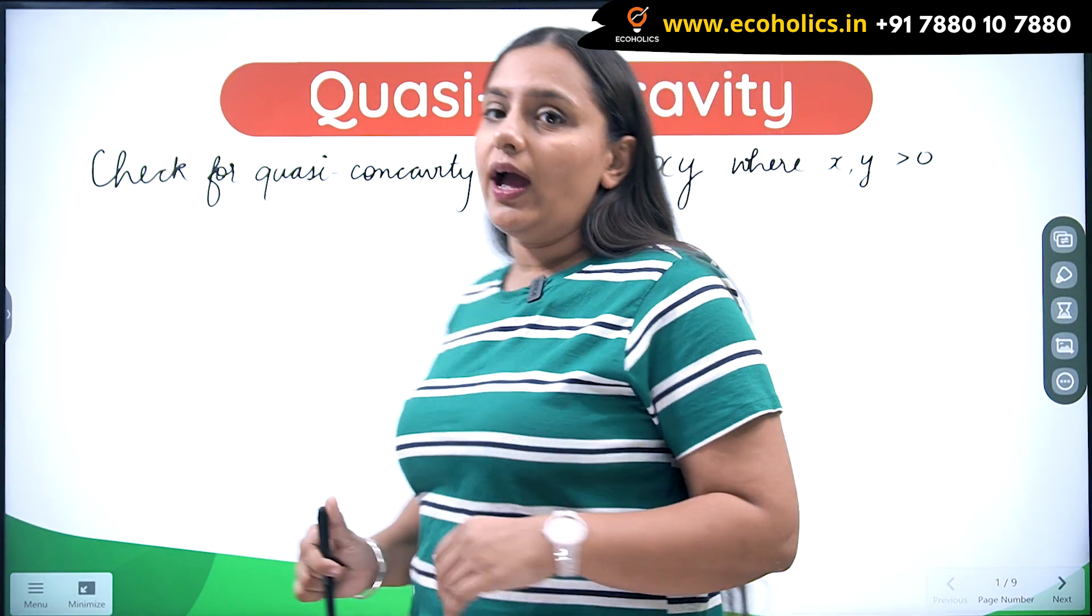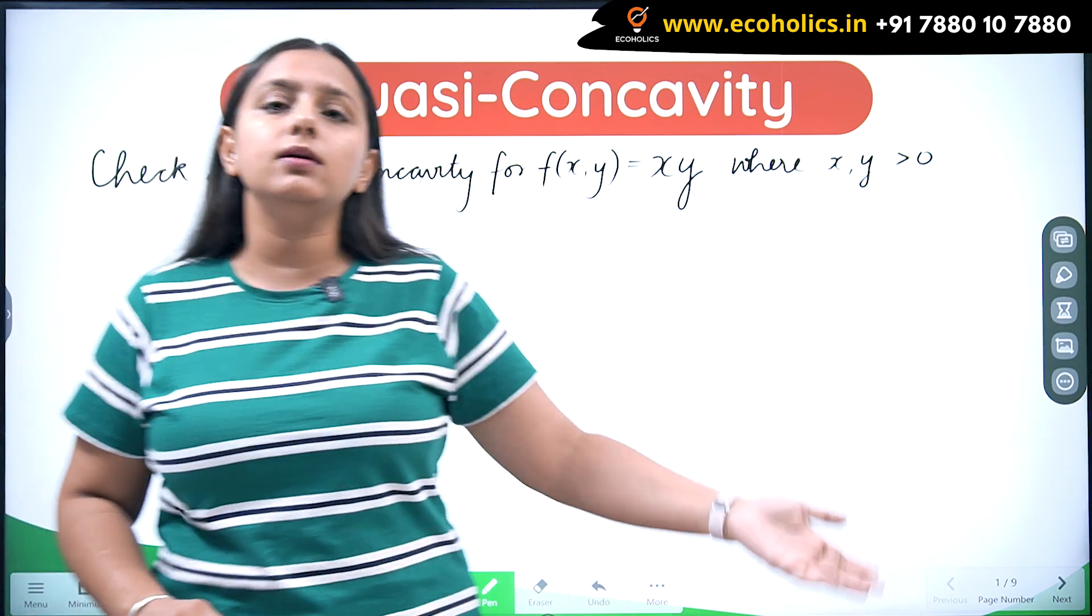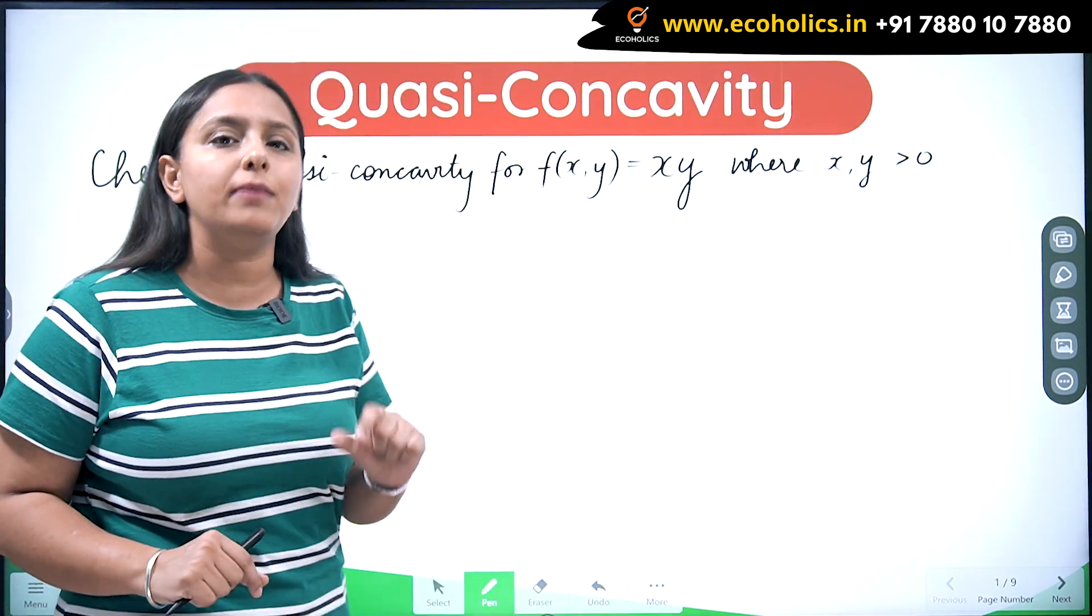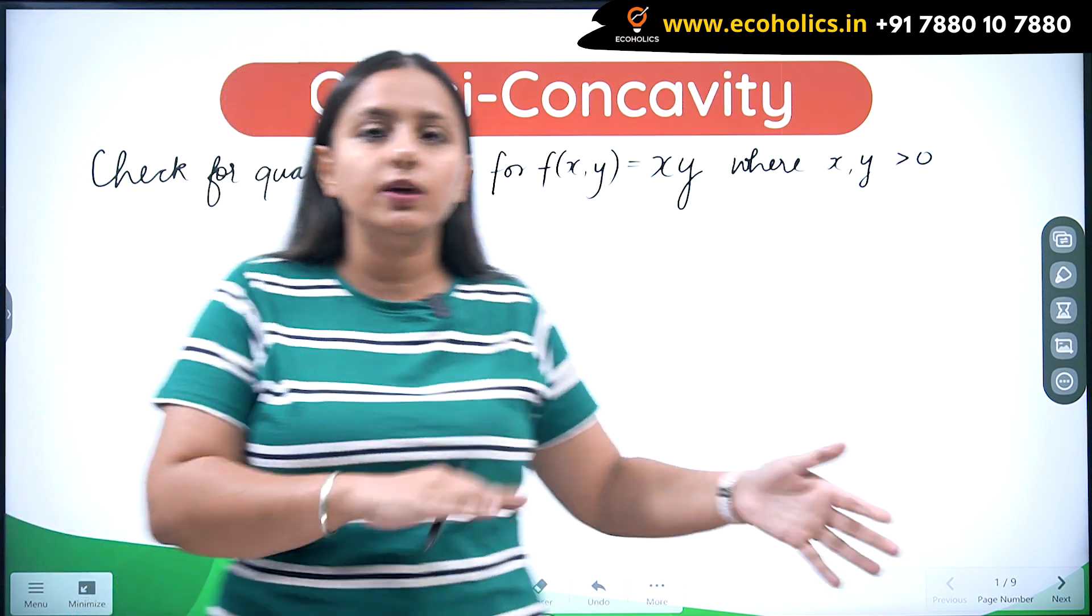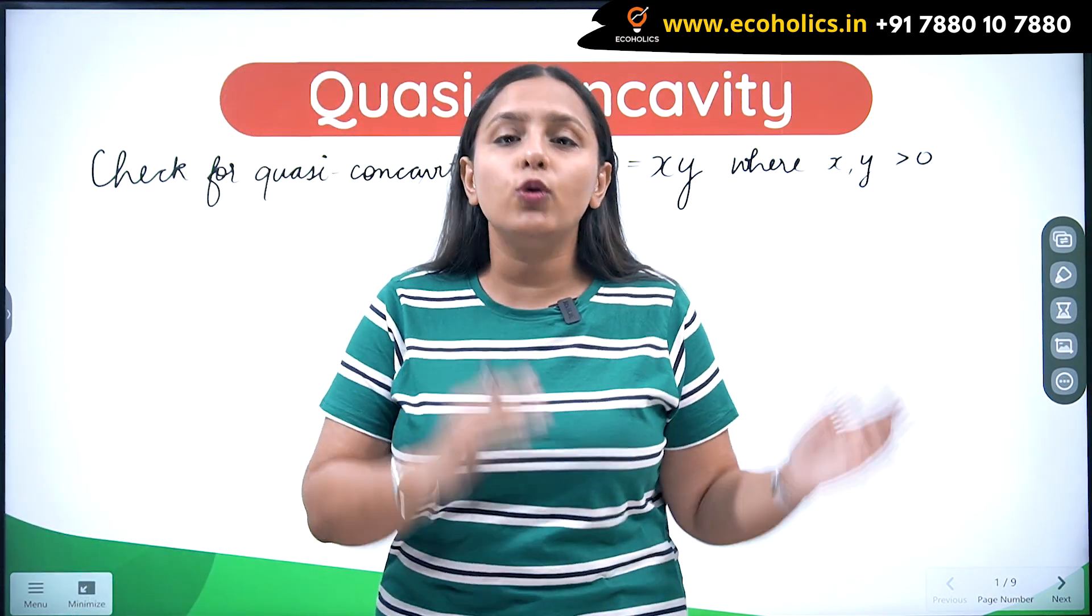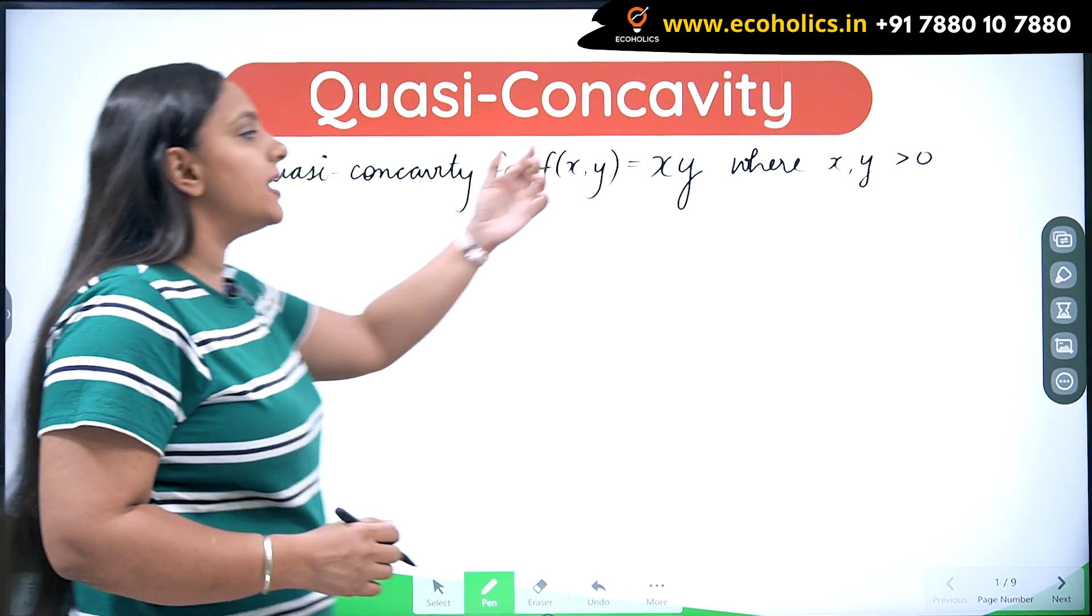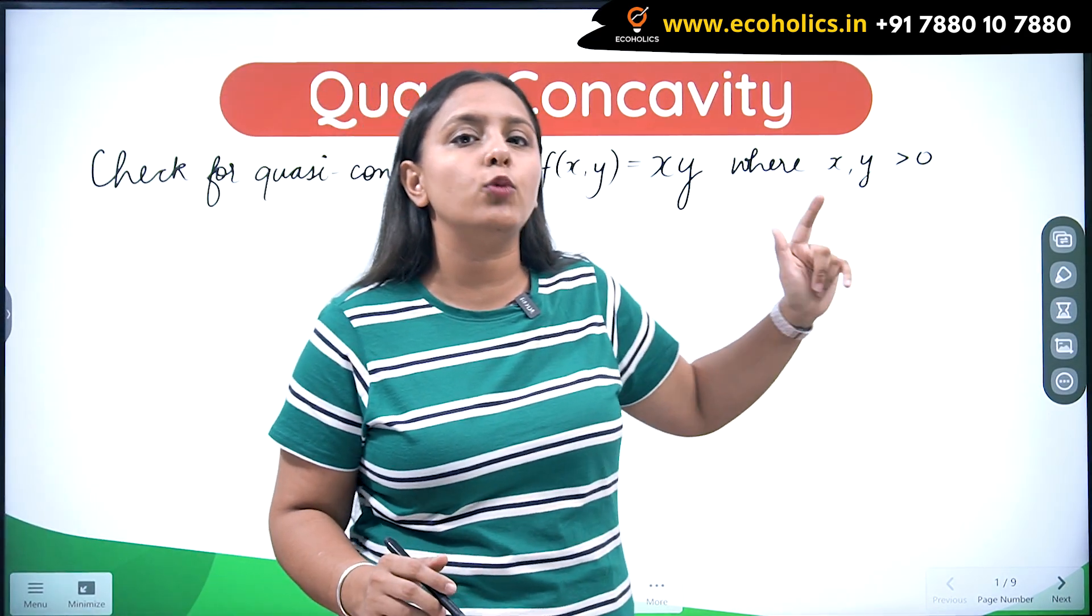So what do we have to do? In the part 2 of the quasi-concavity video, I told you one method to check for the even and odd determinants, so I'm going to use that method for this video. The first thing, since there are just two variables, it means I'm going to have only six different kinds of derivatives, the partial derivatives.